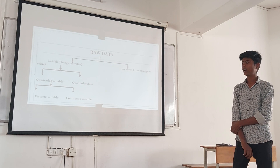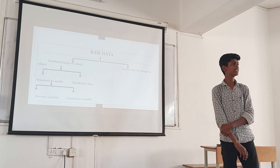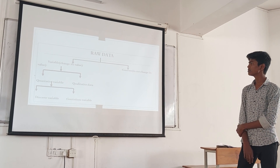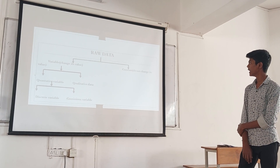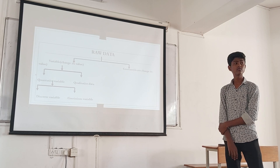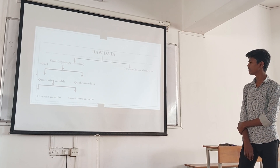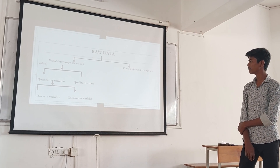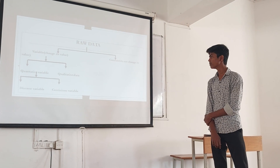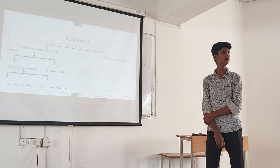Then, raw data. What is raw data? Any unprocessed data is called raw data. There are two types of raw data: variables and fixed numbers. In variables, there are two types: quantitative variables and qualitative variables. In quantitative variables, there are two types: discrete variables and continuous variables.